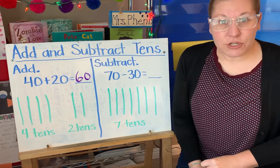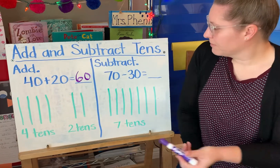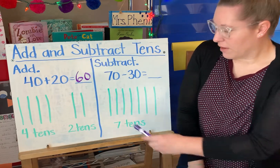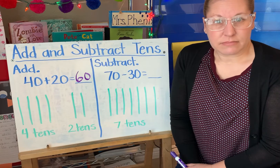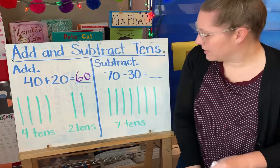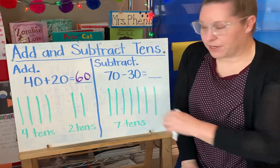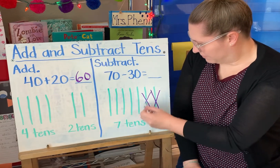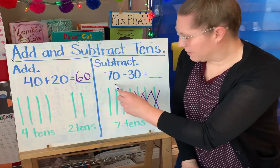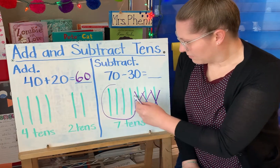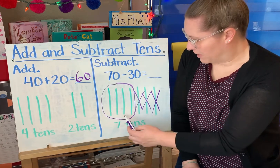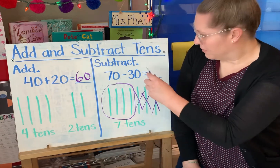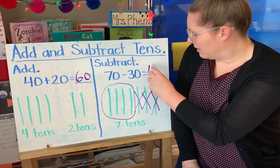Now let's look at a subtraction example. 70 minus 30. I've drawn seven 10s. Now I need to take some away. I want to take away 30, which I know is three 10s. Now what's left? 10, 20, 30, 40 — or four 10s. 70 minus 30 equals 40.